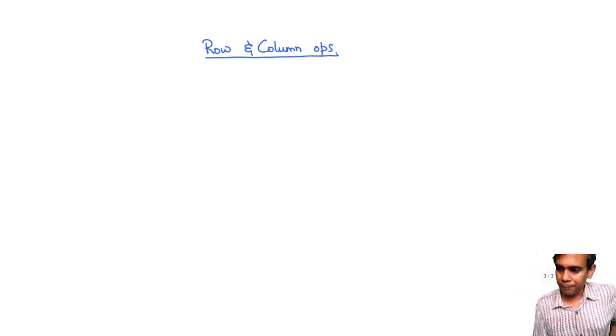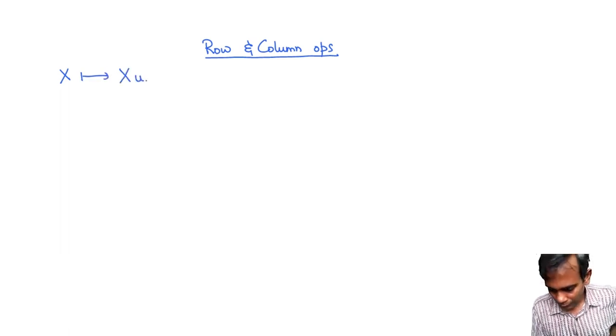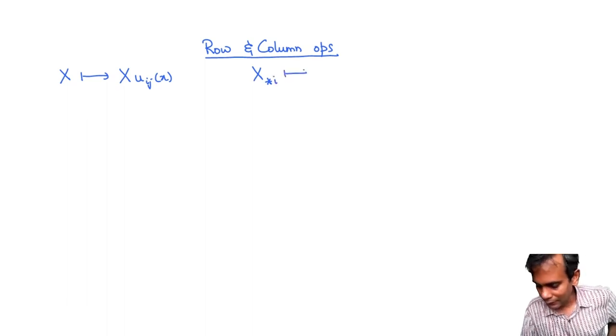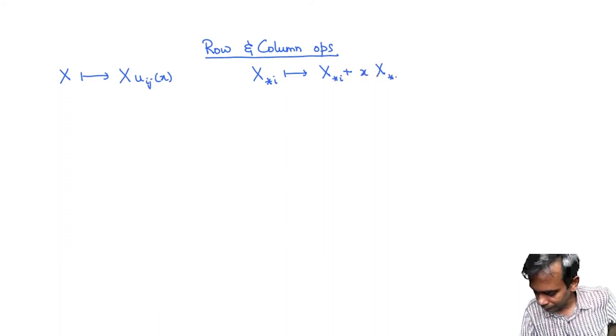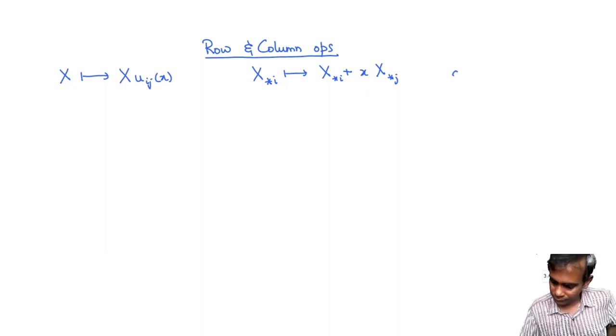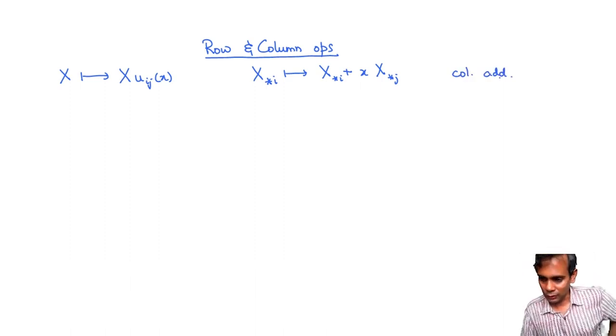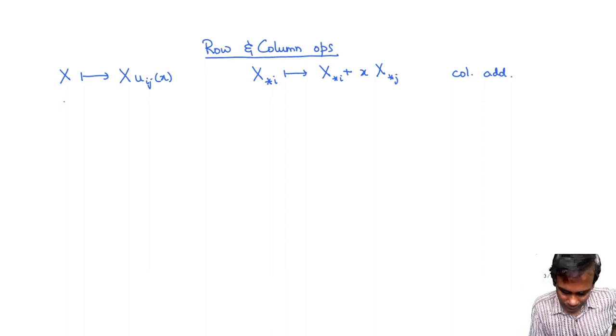So if I take a matrix x and replace it by the matrix x times u_ij(x) then what am I doing? So what I am doing is this ends up being taking the matrix, the ith column of x and replacing it by the ith column of x plus x times the jth column of x. So it is a column addition operation. So you take the ith column and add to it a multiple of the jth column.